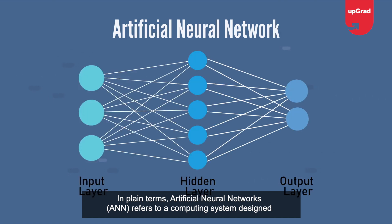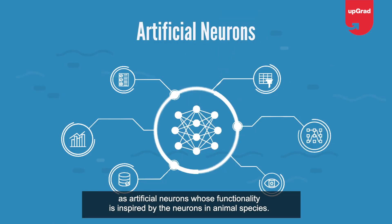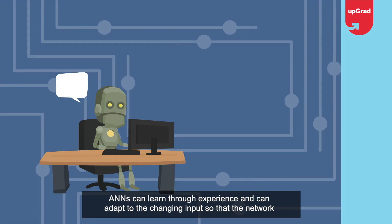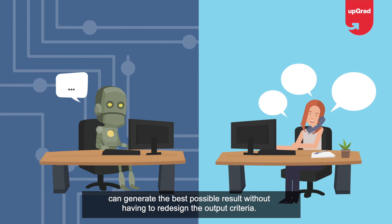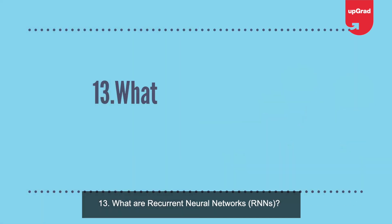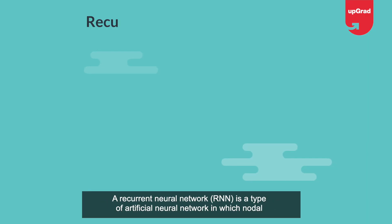Question 12: What are artificial neural networks? In plain terms, an artificial neural network (ANN) refers to a computing system designed after the human brain. Just as the human brain, ANNs are composed of numerous simple processing elements known as artificial neurons, whose functionality is inspired by neurons in animal species. ANNs can learn through experience and adapt to changing input so the network can generate the best possible result without having to redesign the output criteria.